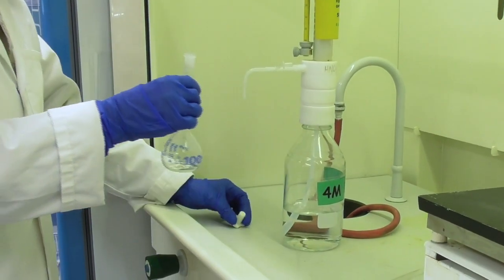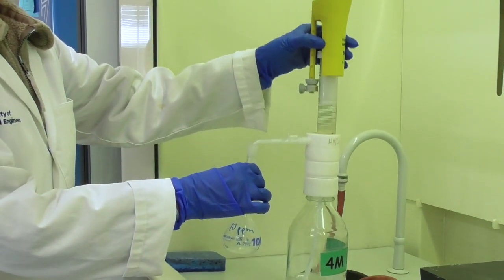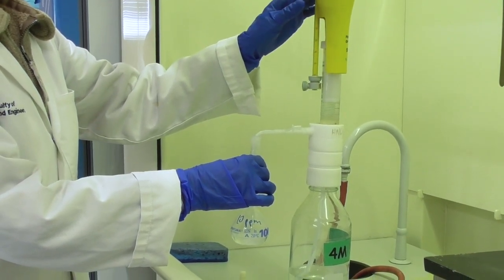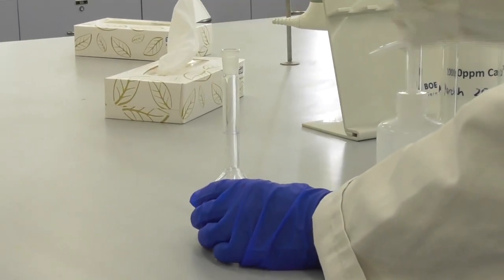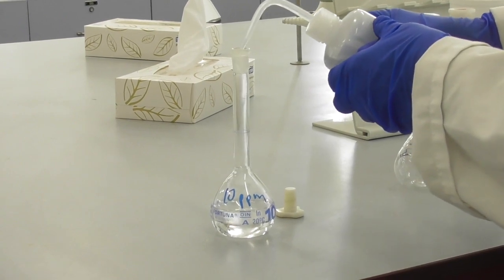Next I head to the fume hood and add 50 milliliters of nitric acid into my volumetric flask. This is to ensure that the standard solutions are close in composition to the actual sample solutions which also contain nitric acid.